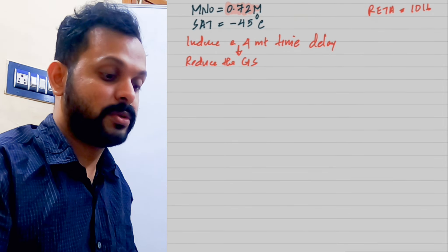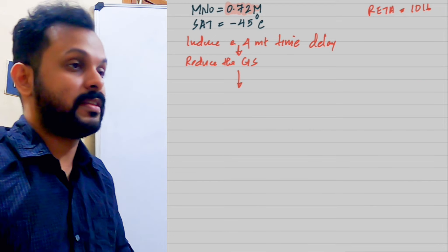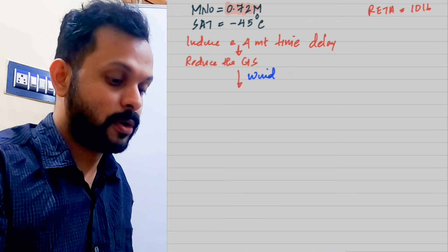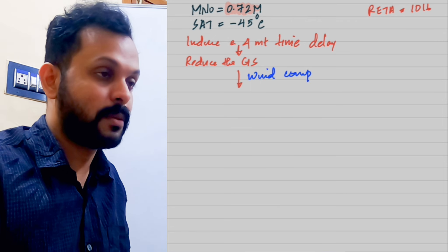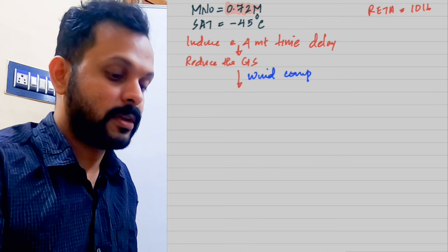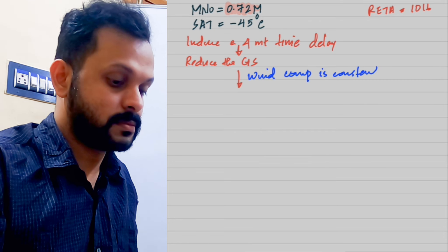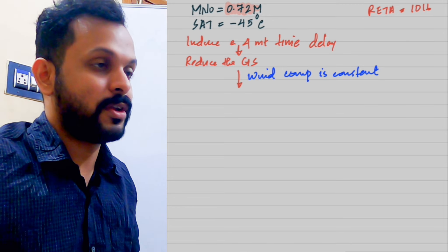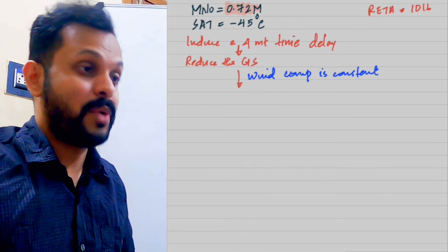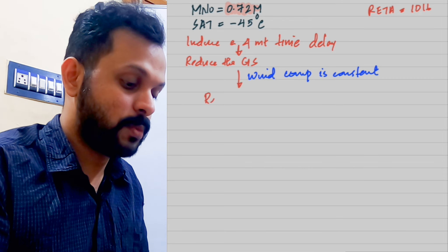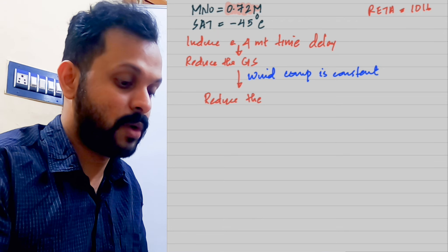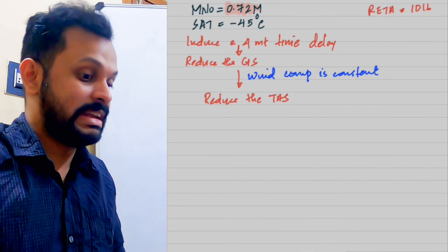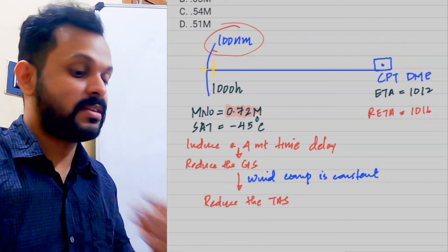Nothing much is mentioned about wind in the question, so we assume the wind component — the tailwind component — is constant. Therefore, the only way to play around with ground speed for a constant wind component is to change your true airspeed. To reduce the ground speed for the given wind component, we have to reduce the true airspeed. So I need to find out what the current ground speed is for an ETA of 1012, and then what the TAS would be for a revised ETA of 1016.